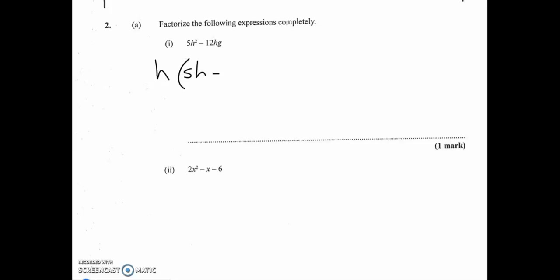Question 2a: factorize the following expressions. Factorization means writing an expression as a product of factors. For 5h² − 12hg: the numbers 5 and 12 share only 1, but both terms have h — h² and h — so h is common. Taking out h: h(5h − 12g). That can't go further.